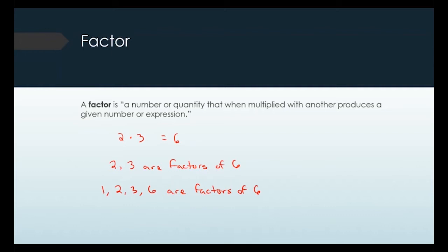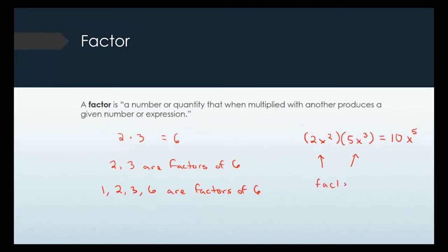When we have variables, it's the same definition. If I have 2x squared times 5x cubed, that multiplies out to 10x to the fifth. So 2x squared and 5x cubed are factors of 10x to the fifth.